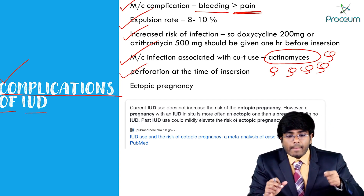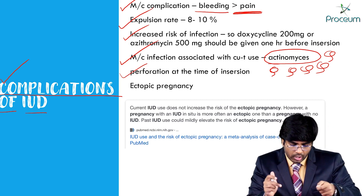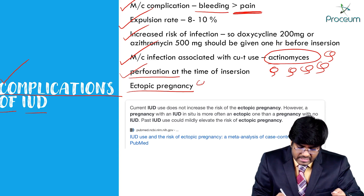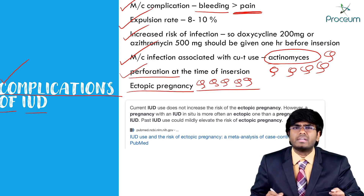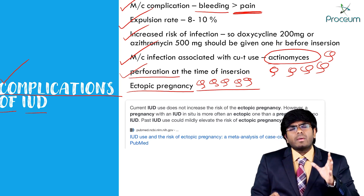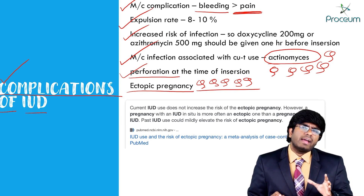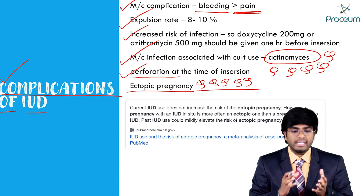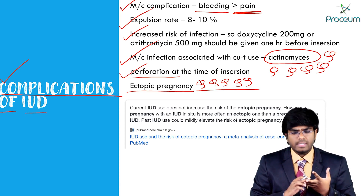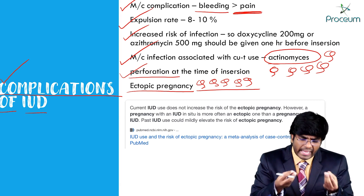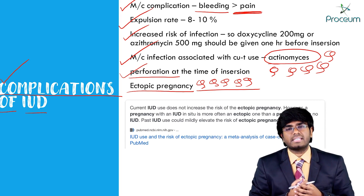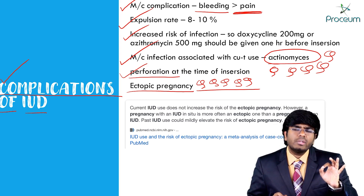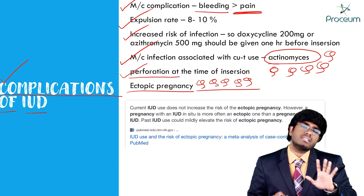Other complications include uterine perforation — the copper T may perforate the uterine wall during insertion. Ectopic pregnancy is also an important complication. Placing an IUD generally prevents pregnancy, but if the IUD fails for any reason, pregnancy can occur.